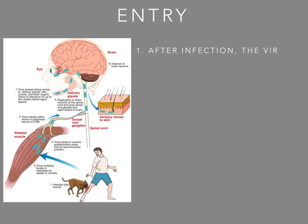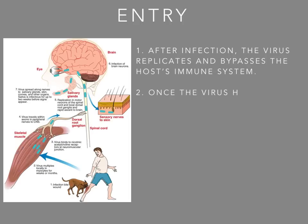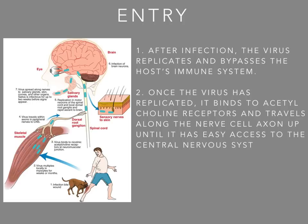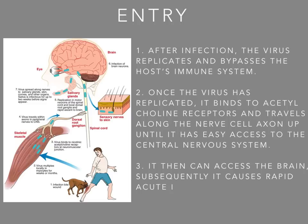After infection, the rabies virus replicates and bypasses the host immune system. Once the virus has replicated, it binds to an acetylcholine receptor and travels along the nervous cell axon until it has access to the central nervous system. It then can access the brain, subsequently causing rapid acute inflammation and chronic infection.